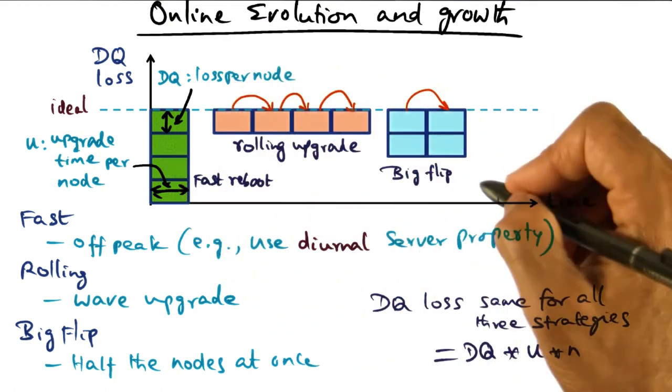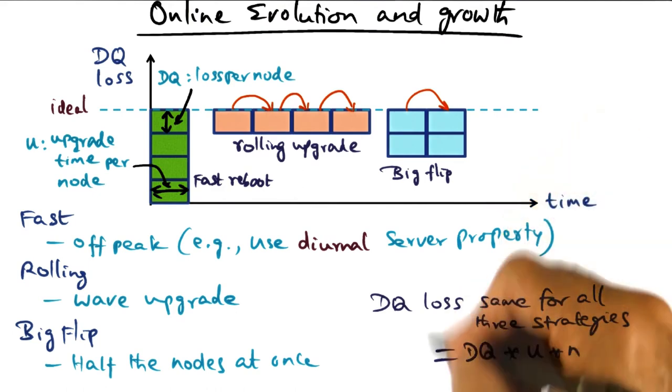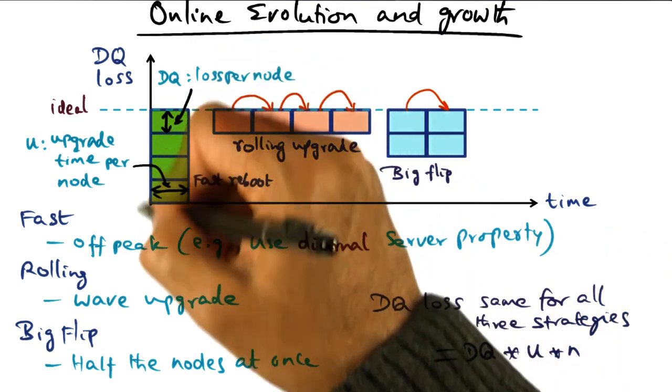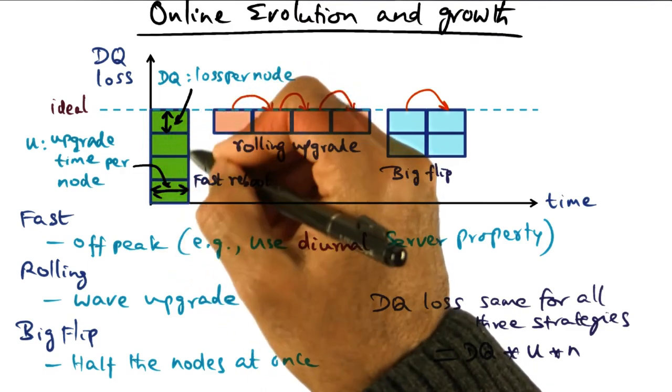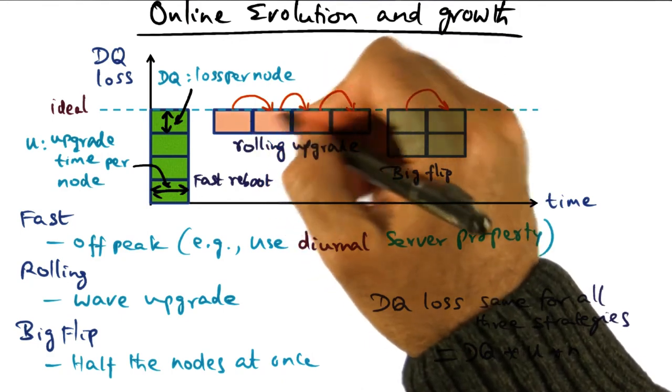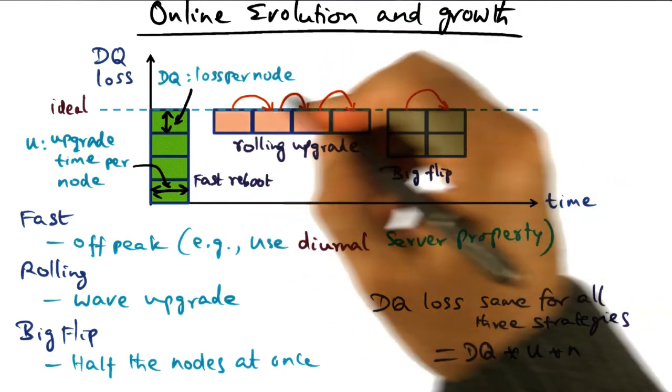And all that these different strategies are saying is, as a system administrator, you have a choice on how we want to dish out the DQ loss and make it apparent or not apparent to the user community. In this case, it's going to be apparent to the entire user community that there is an upgrade going on. In this case, different segments of the user community are going to notice that the service has become unavailable for a short duration of time.